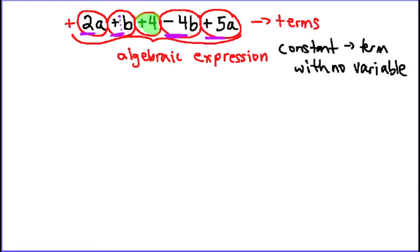The final thing we need to be able to identify are what we call like terms. Like terms are the terms that have the same variables. So I'm just going to connect those — we have the 2 b terms, and with a different color we have the 2 a terms. So what we can see here is that we've got 1, 2, 3, 4, 5 terms: one of the terms is a constant, and we have 2 a terms and 2 b terms. These are the different parts you need to be familiar with when working with algebraic expressions.